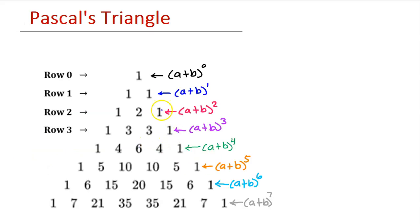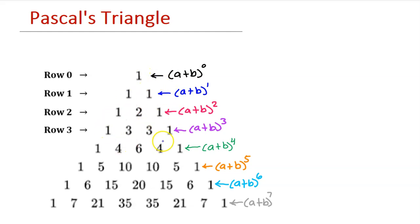Let's do one more row together. 1 plus 3 is 4, 3 plus 3 is 6, and 3 plus 1 is 4. Then you finish off the row with two 1's. We can use Pascal's Triangle to find the coefficients of a binomial raised to a power. Notice that we begin with row 0, then row 1, row 2, row 3, etc. So a plus b to the fourth power will have these coefficients in expanded form.